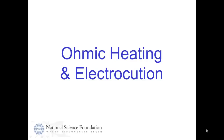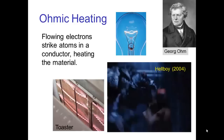Ohmic heating and electrocution. One property of a current when it's flowing through material is that the electrons tend to randomly strike atoms in the material, and that resulting energy is transferred into the material and heats it up.